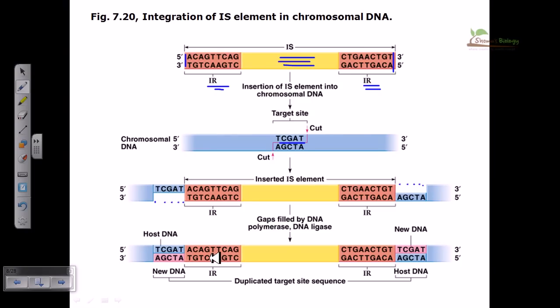This gap has to be resealed. The gap is filled by DNA polymerase and DNA ligase, the normal machinery or proteins which are needed for replication of bacterial DNA or bacterial chromosome. As a result, we can see the IS element inserted onto our target DNA.